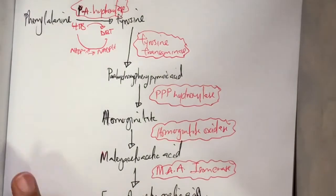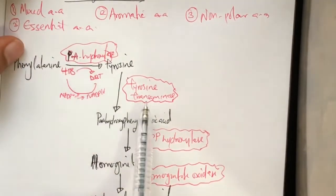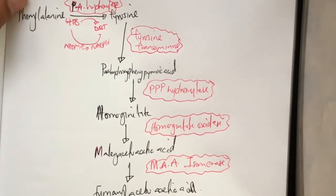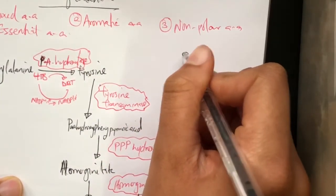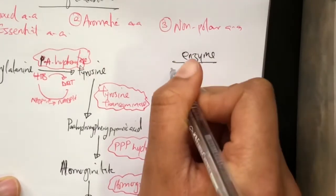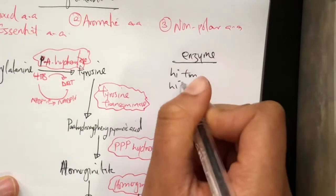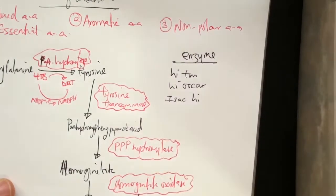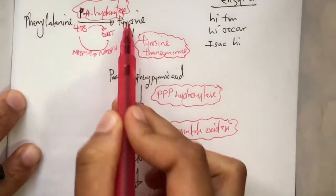I know you can't wait to know the mnemonic for this. I just made it up. I don't know if it will work for you, but it did work for me. So for the enzymes, you can see we have hydroxylase, transaminase, hydroxylase, oxidase, isomerase, and hydrolase. The enzymes mnemonic is: Hi Tim, Hi Oscar, Isaac Hi. Yeah, it's funny.